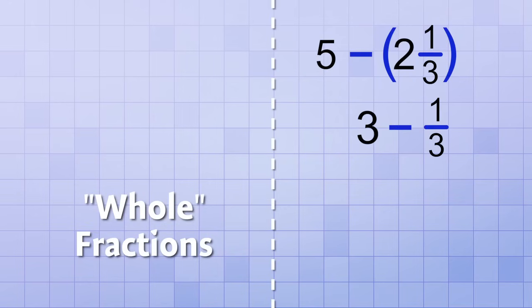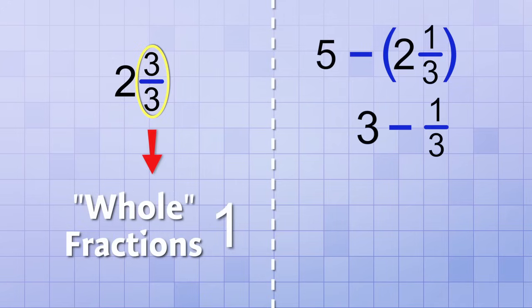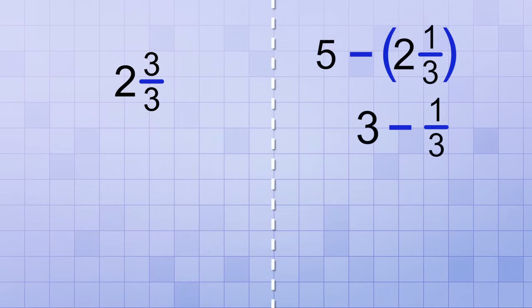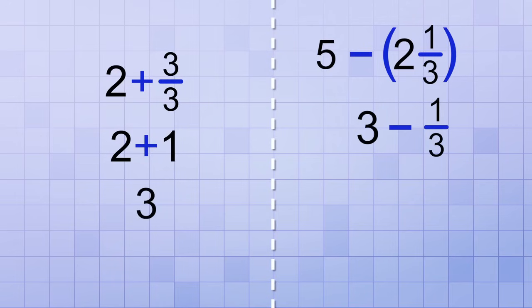When adding mixed numbers, sometimes we would get an answer like this, 2 and 3 thirds. But since 3 thirds is what I call a whole fraction, its value is just 1. And we learned that we could simplify an answer like that. 2 and 3 thirds is 2 plus 1, which is 3. Well, how about if we just do that same process in reverse? Instead of simplifying, let's unsimplify.